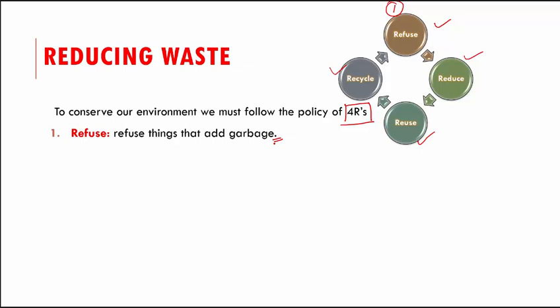The second R is Reduce — reduce the things that cause garbage. In a household, we often buy more than we need and throw out whatever we don't use. For example, we buy too many vegetables and fruits, and sometimes we can't eat them or store them for long, so they start rotting and get thrown out. Reduce means buying only what is required, thereby reducing the amount of garbage generated.